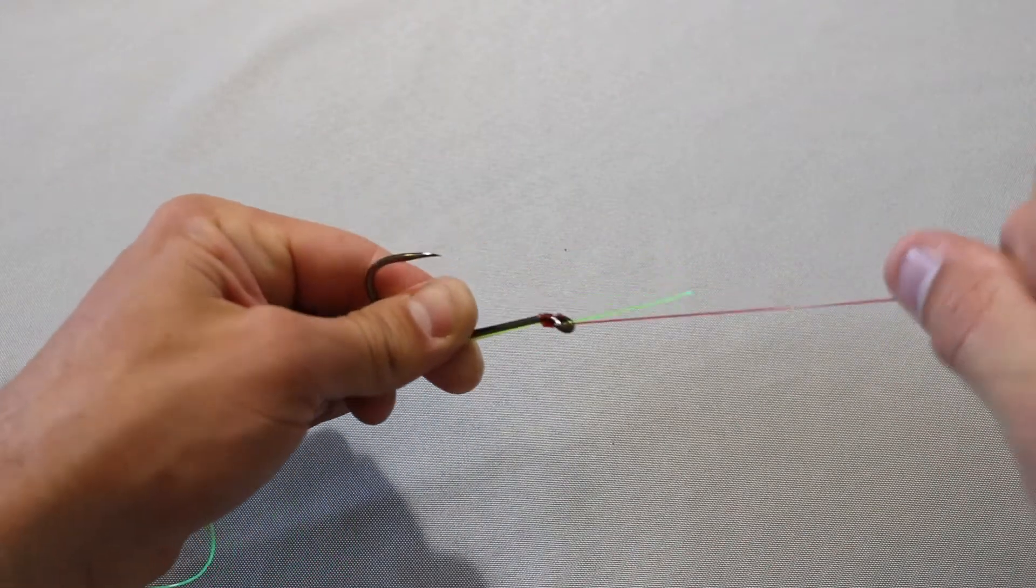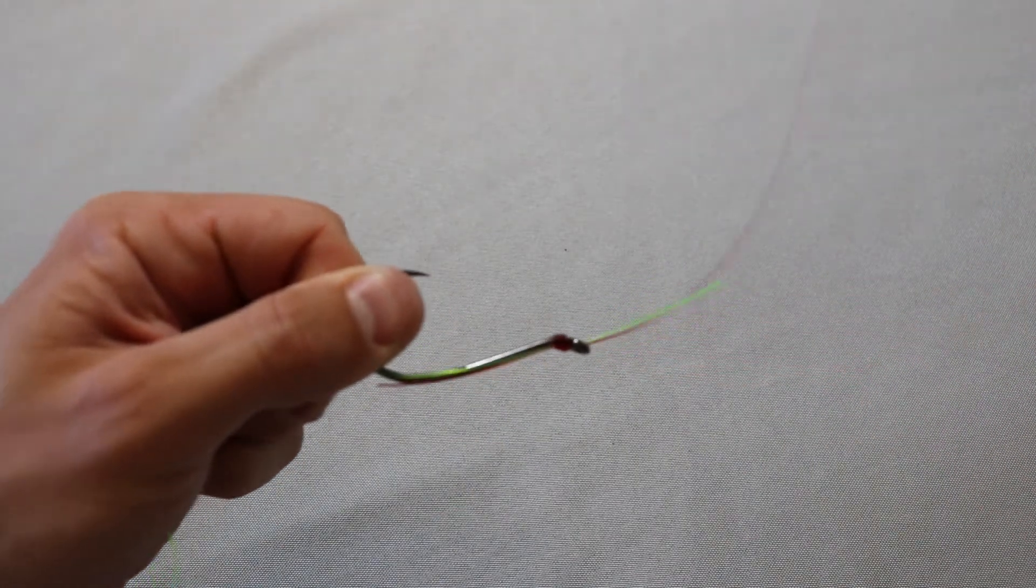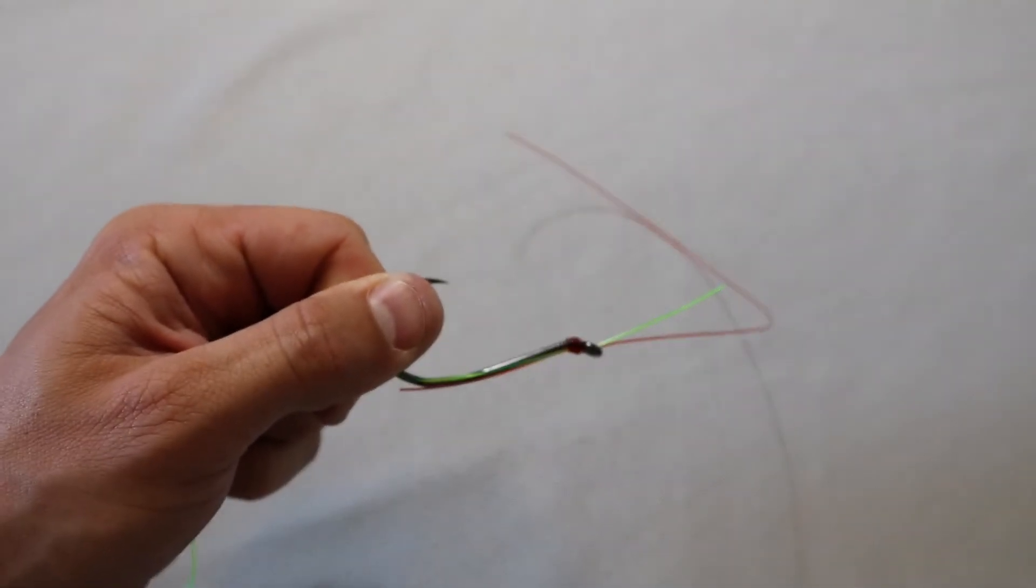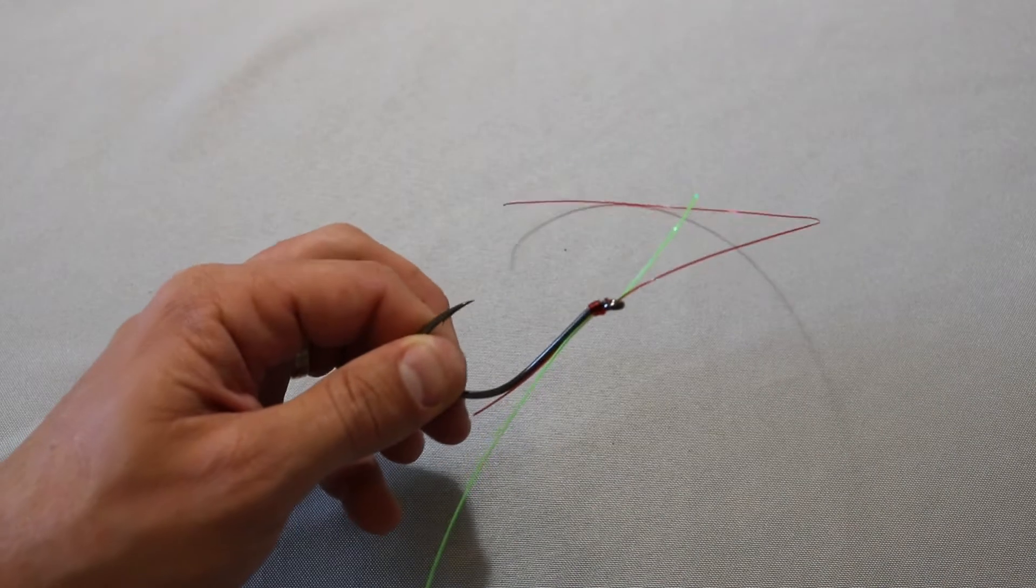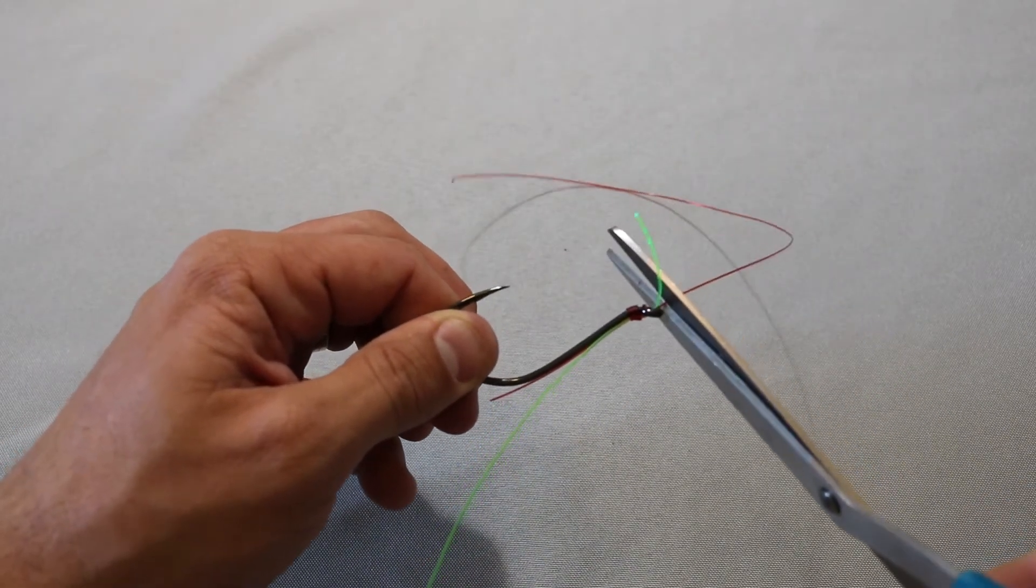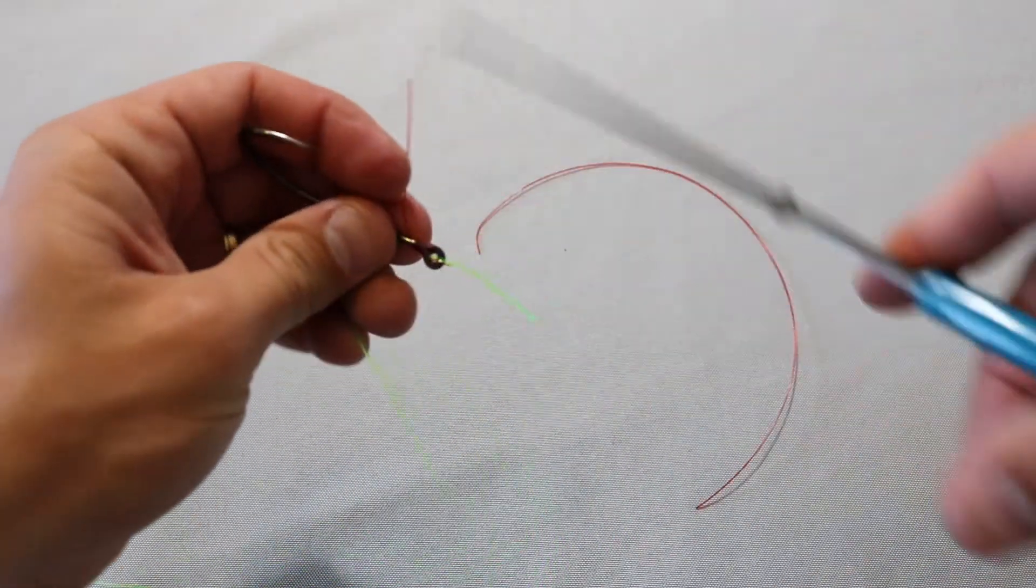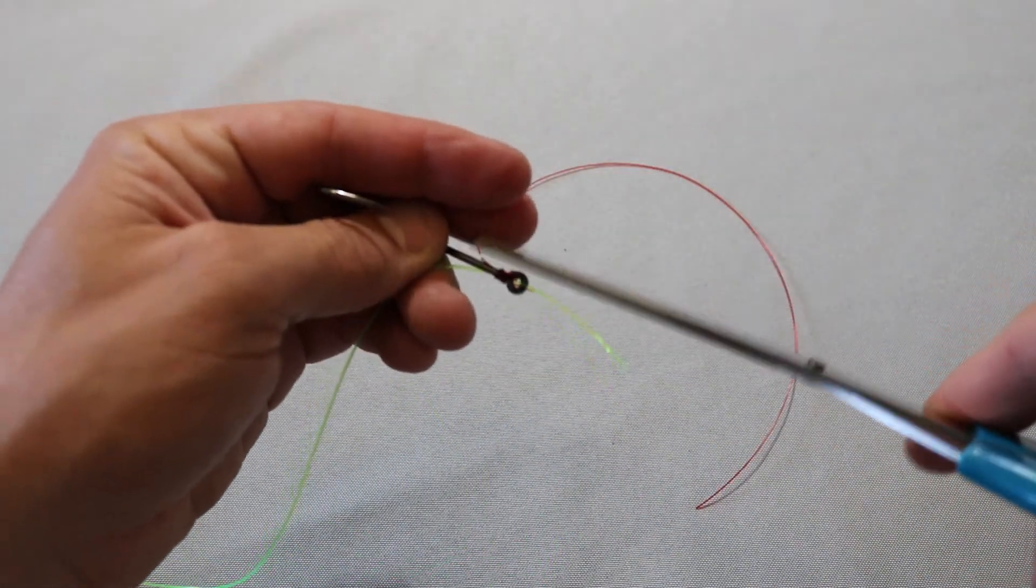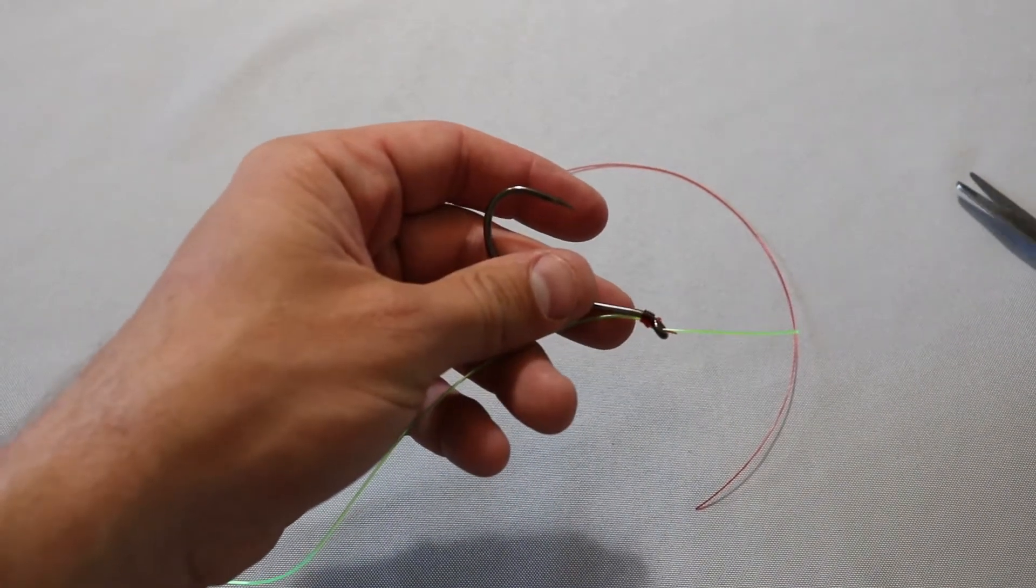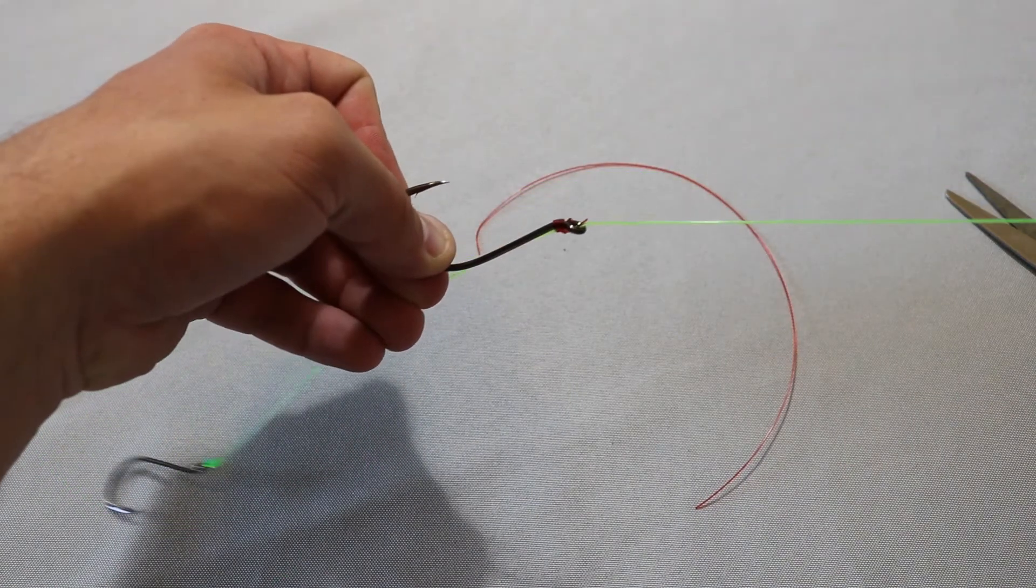So once you do that, you're going to give it a good yank and you have an adjustable knot now. Trim these real quick. Trim both of them, not a big deal. It'll give you something to grab onto, and then you can pull that.